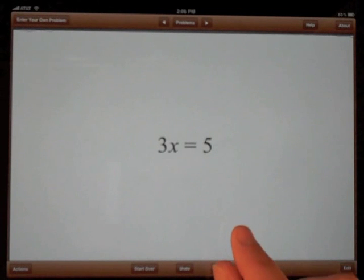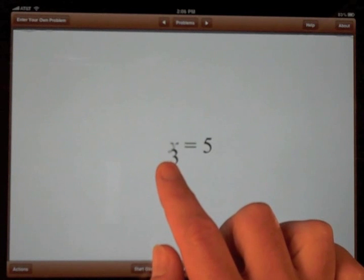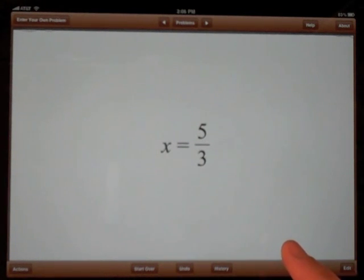Squeeze terms to combine them. To divide both sides of the equation by 3, touch the 3 and drag it down and across the equal sign. That's it.